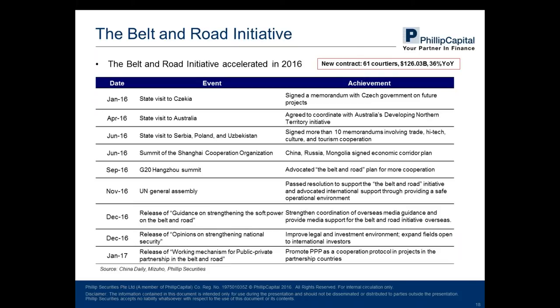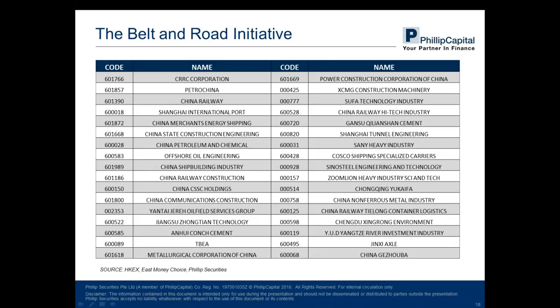Another sector we believe will be beneficial is the Belt and Road Initiative, which will continuously be one of the most important government projects. Especially after Trump won the US election, China needs to diversify external demand to offset the weakening US demand caused by trade protectionism. The government has signed new contracts with 31 countries, and investment money increased by 36% this year. Related stocks are mainly in construction, oil, railways, ports, and shipping — many of which have the largest market cap in their sectors.